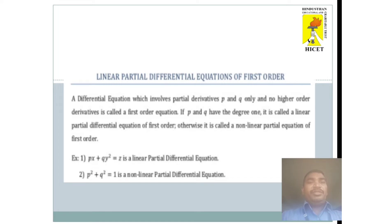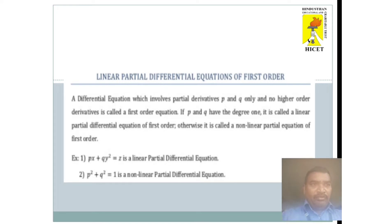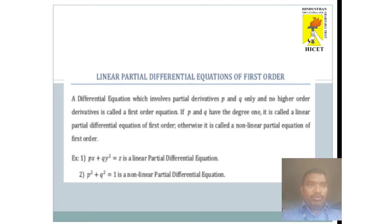For example, consider Px + Qy² = z. Here, P and Q are first order derivatives and the power of P and Q is 1, so it is a linear partial differential equation. Suppose we consider P² + Q² = 1. Here, the derivative is raised to a power greater than 1, so it is called a nonlinear partial differential equation.